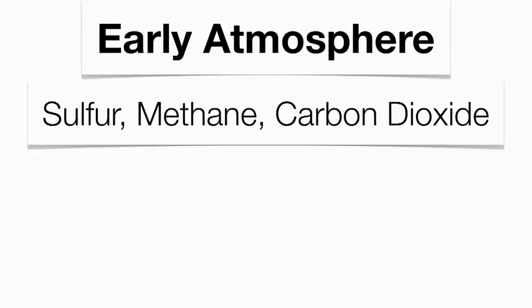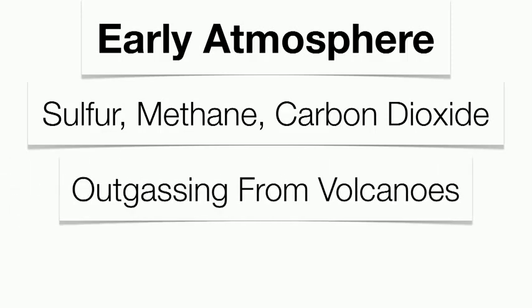The atmosphere today is very different from what it was like 2 billion years ago. There were a lot of noxious gases like sulfur and methane in the atmosphere, unlike today which is mostly nitrogen and oxygen. Those gases basically came through the violent volcanic eruptions that occurred during the early years of our Earth. That process, called outgassing, basically released a tremendous amount of noxious gases into the atmosphere.